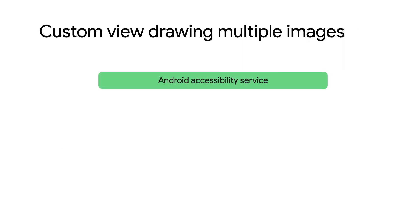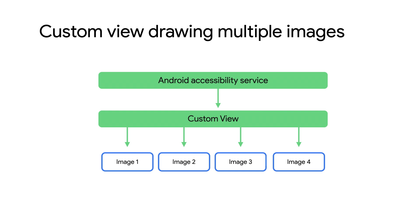Fortunately, you can implement the ExploreByTouchHelper from AndroidX to tell the system about what's on the screen. Even though it's called the ExploreByTouchHelper, it's useful for custom views on TV that users interact with using a D-pad. For example, if you have a custom view that's drawing a row of video thumbnails, that just looks like one view to Android. But the system needs to know how to move accessibility focus from thumbnail to thumbnail. This is where the concept of virtual views comes in.